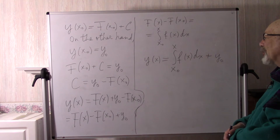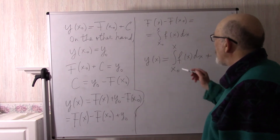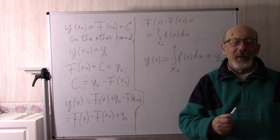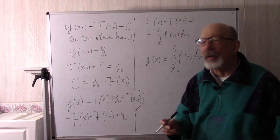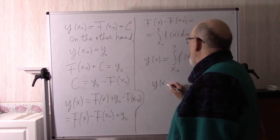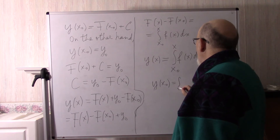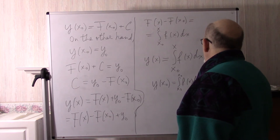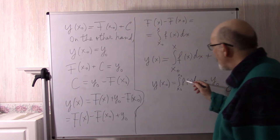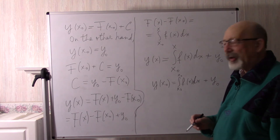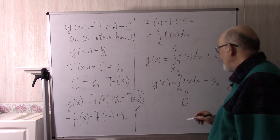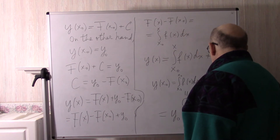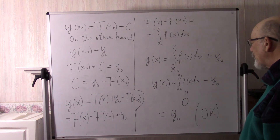Let us make sure this is the solution of our problem. We check first the initial condition: y(x₀) equals the integral from x₀ to x₀ of f(x) dx plus y₀. This integral obviously equals zero, so it equals y₀. The initial condition is satisfied.